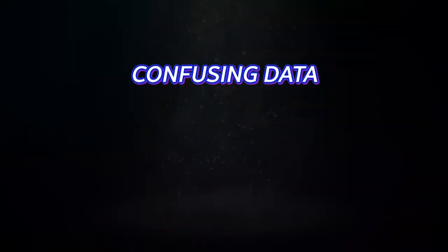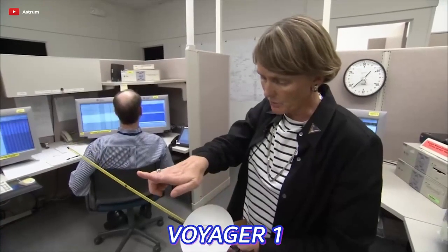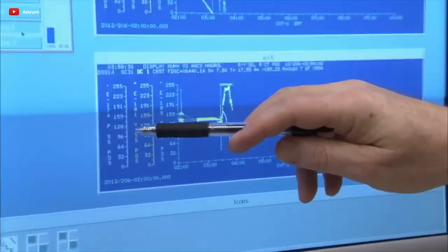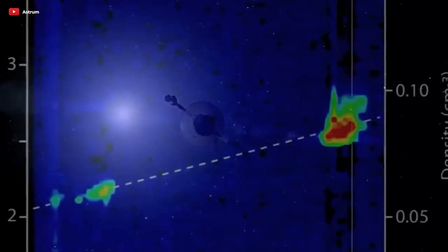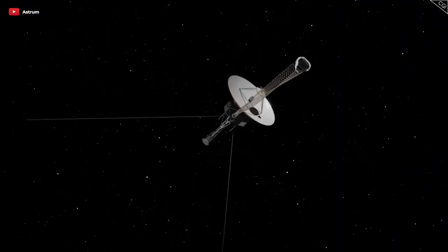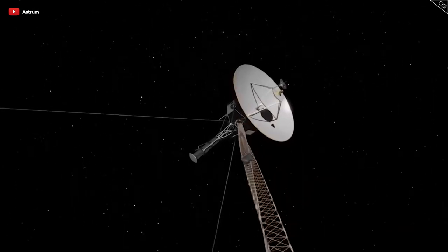Confusing Data. Voyager 1 has reportedly been experiencing some problematic behavior, as reported by NASA. A study states that the probe is still functioning normally, but the readouts from its Attitude Articulation and Control System do not match the spacecraft's movements and orientation.